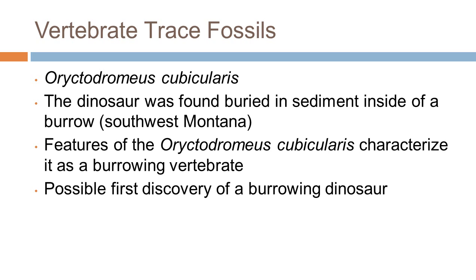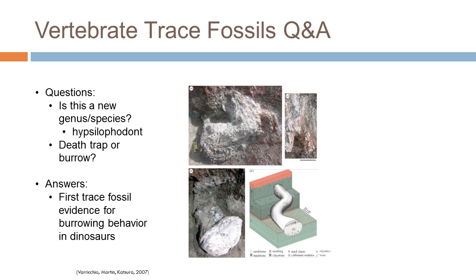A fossil site containing one adult and two juvenile dinosaurs was uncovered in southwest Montana. These fossils were found buried in sediment inside of a burrow, and these particular fossils belong to Oryctodromeus cubicularis, which is potentially the first evidence for burrowing behavior in a dinosaur. Oryctodromeus cubicularis is a new genus and species of Hypsilophodontid. The burrow shown in the figure could have simply been a death trap or feeding grounds of a scavenger, but evidence points to Oryctodromeus being the digger of this particular burrow.